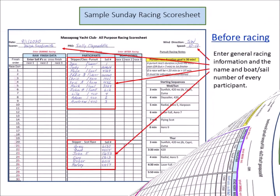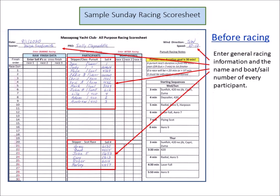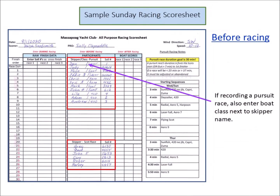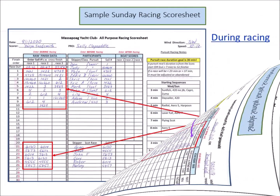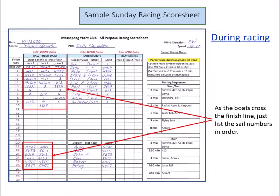Let's look at the form more closely by walking through a fabricated example of a typical Sunday afternoon's racing. Before racing, general information about the racing day should be input along with a complete list of participants and their sail numbers. When recording a pursuit race, also enter boat class next to the skipper's name. During racing, the race committee finish boat must capture a record of what happens at the finish line. All score processing, resolution of all discrepancies, and answers to all questions rely on the capture of this basic information — the raw data.